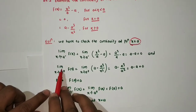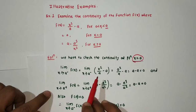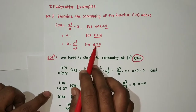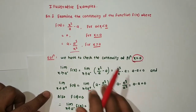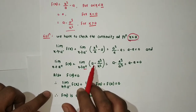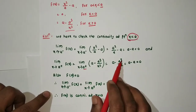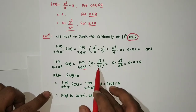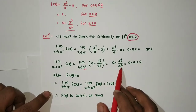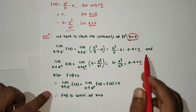For the right hand limit: limit as x tends to a plus of f(x) equals limit as x tends to a plus of (a - a³/x²). Since x tends to a from the right, we substitute x = a, so x² becomes a². This gives a - a³/a², and since a³/a² = a, we get a - a = 0. So left hand limit is 0 and right hand limit is 0.